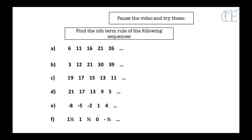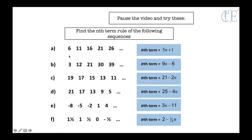Pause the video and try working out the nth term for these sequences. So, the answers: the first one is a plus 5, so it must be 5n. To get from 5 to 6 we just add 1, giving 5n + 1. Here we are adding 9 every time, so it's 9n. And to get from 9 to 3 we need to take away 6, giving 9n − 6. Here we are taking away 2 every time. To get from minus 2 to 19 we need to add 21, so minus 2n + 21 is fine as well.